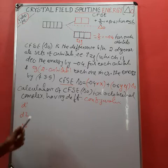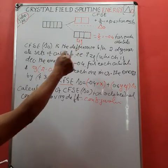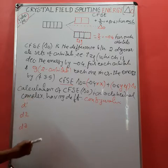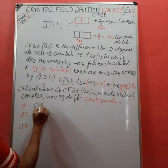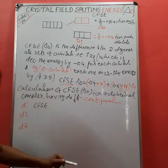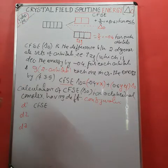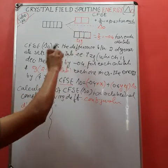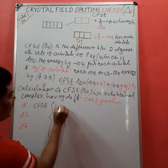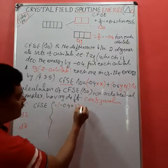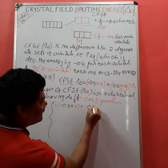For d1, d2, and d3 configurations, there is no change in the delta-oh energy, because electrons fill one by one into different orbitals. The CFSE will behave the same for any ligand — irrespective of whether it is a weak field or strong field ligand. The first electron fills in the t2g orbital, giving minus 0.4 multiplied by 1, and there are zero electrons in eg, so the CFSE for d1 is minus 0.4 delta-oh.